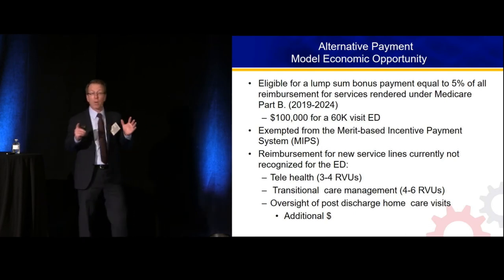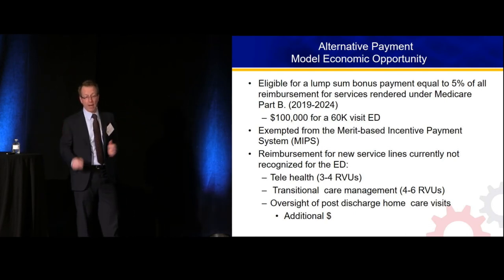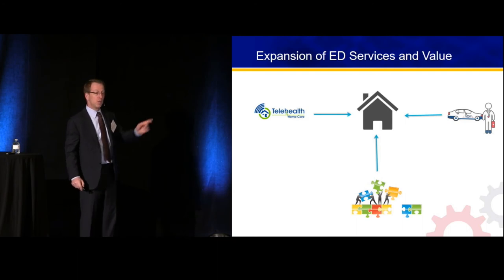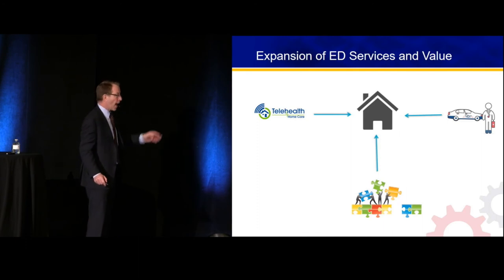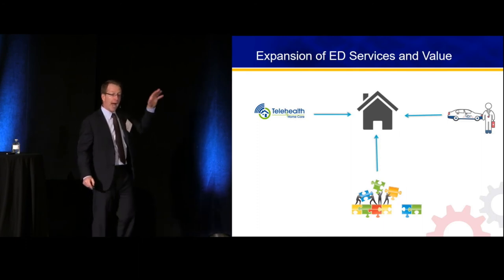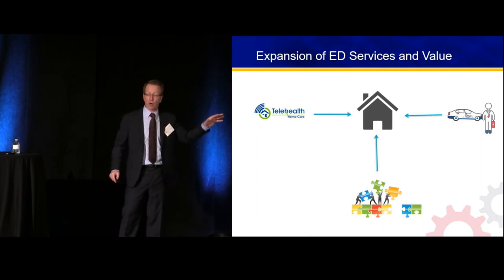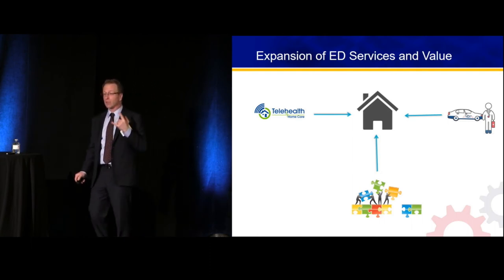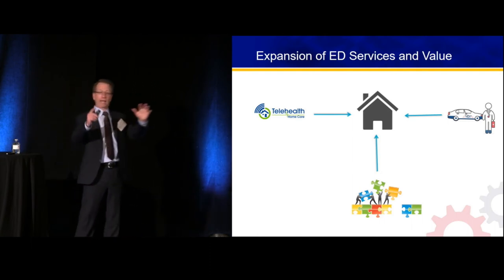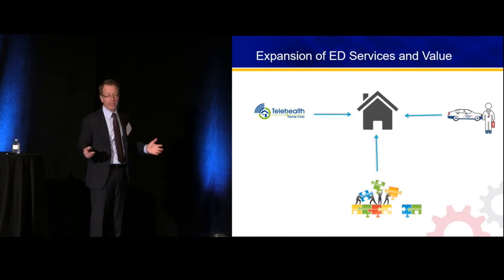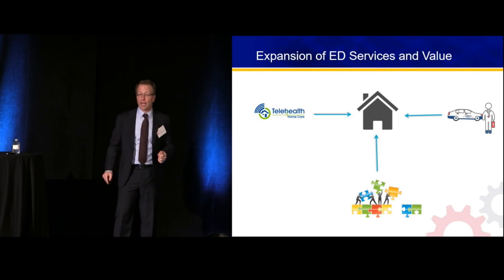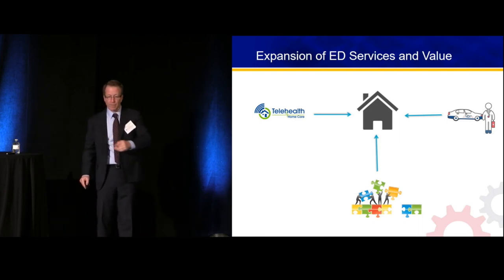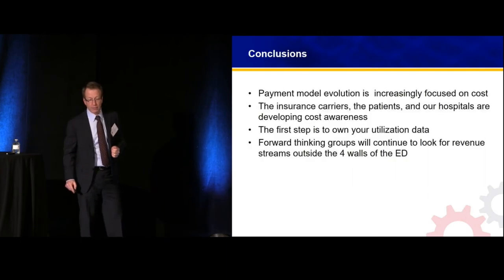This is a big part of where alternative payment models are going right now. At the bottom of the slide, we're going to have complex care coordination — three or four RVUs for spending time on the phone, figuring out how to send home 3% of patients. We're going to use telehealth to beam into that house for three RVUs, extending our reach beyond the emergency department, and put a paraprofessional in the house.